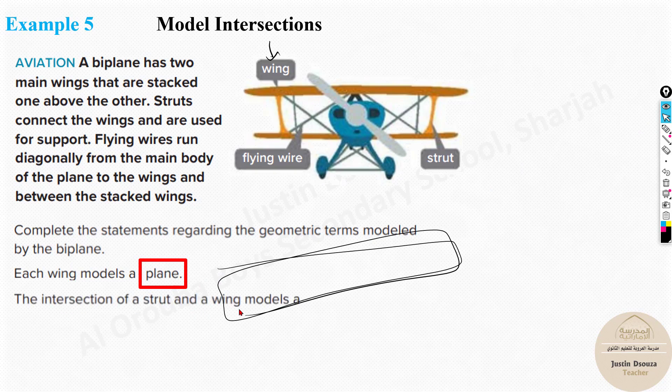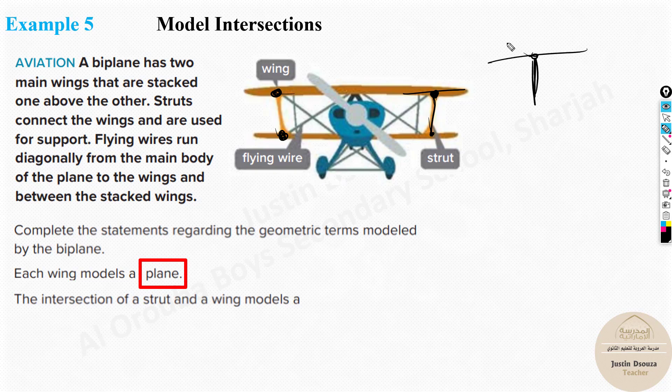Strut and a wing. This is important. Now whenever you have the intersection of a line and a plane, it will be a point over here. See, where is it intersecting? These are the points the intersection occurs, right? Because strut is like a straight line. It's a line. So it is at a point. Models a point basically.